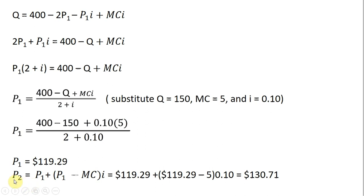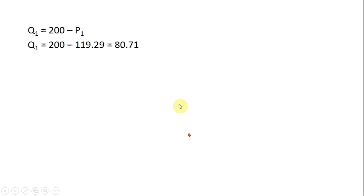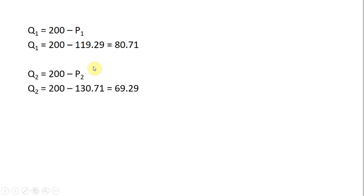For the price in year 2, we use our expression for P subscript 2 and plug in $119.29 for the price in year 1, subtract the marginal cost, and account for the interest rate. The price in year 2 is a little over $130. Going back to the demand equation, around 80 units will be sold in year 1 and almost 70 units in year 2. Notably, the amount sold in year 1 plus year 2 equals the 150 units the mining company had available.